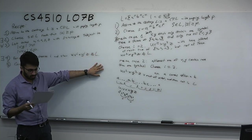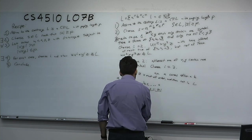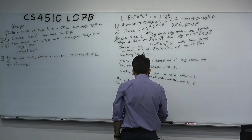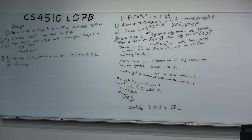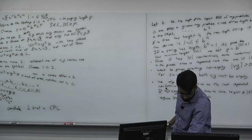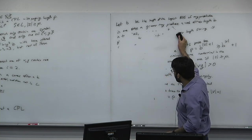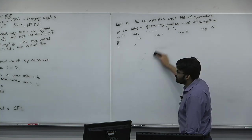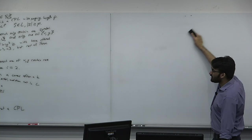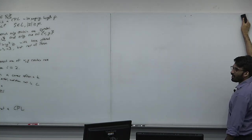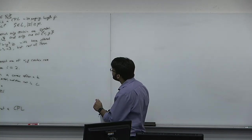These two meta-cases are logical complements — either v and y both contain only one type of symbol, or at least one contains more than one. Every possible case falls into one or the other. For each meta-case we chose an i and showed the pumped string is not in L. We conclude L = {A^n B^n C^n} is not a CFL.